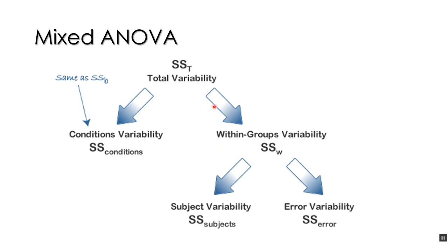Because we have one factor within subjects, we can take the within-groups variability — which normally we'd call error — and partial out the variability due to subjects from the variability due to error or randomness. Now we have error, the effects of the treatment, and the effects of subjects being different people. We can look at each one individually with an F ratio to determine the effect of the independent variable and the effect of having subjects being different people.